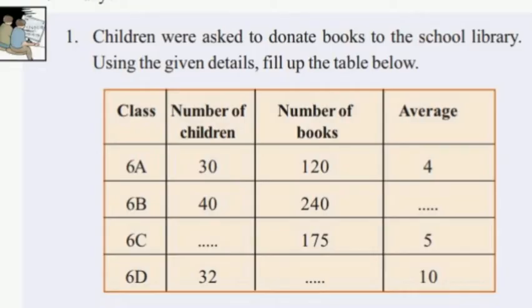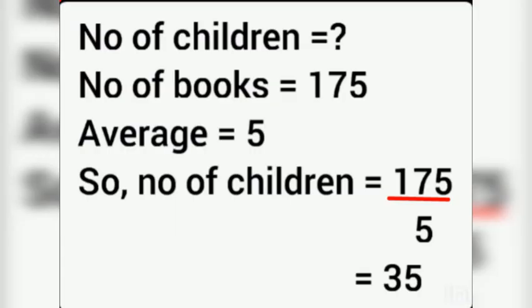In class 6C, we don't have the number of children, but we have the number of books and the average. The number of books is 175 and the average is 5. We have to find the number of children. Number of children equals number of books divided by average: 175 divided by 5, and we get 35.